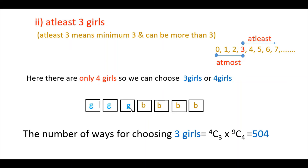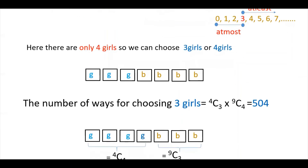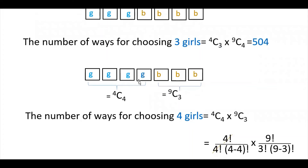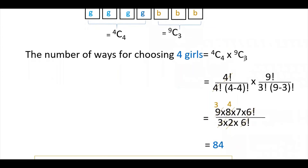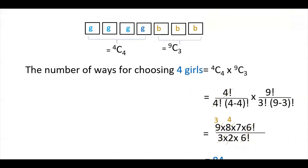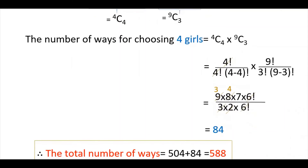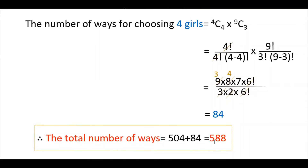If you choose 3 girls, the remaining 7 minus 3 equals 4 boys — this value was already calculated in the first case, so that is 504. In the second sub-case, if you choose 4 girls: out of 4 girls, 4C4, and the remaining 7 minus 4 equals 3 boys, so 9C3. Multiplying these two gives the number of ways for 4 girls, which is 84. Adding 504 and 84 gives the total number of ways in the second case: 588.